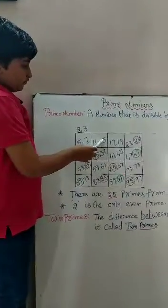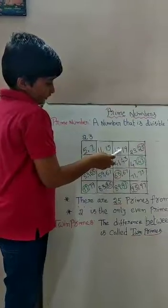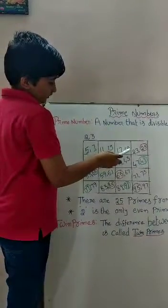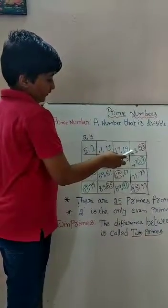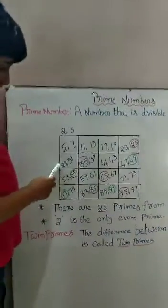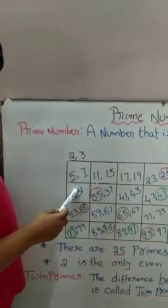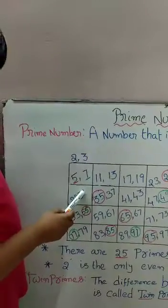11 plus 2 is equal to 13. 13 plus 4 is equal to 17. 17 plus 2 is equal to 19. 19 plus 4 is equal to 23. 23 plus 2 is equal to 25. 25 plus 4 is equal to 29.